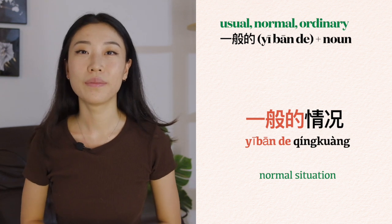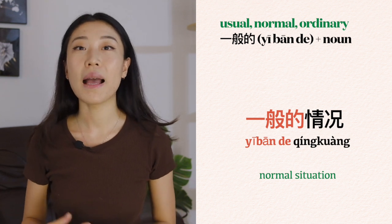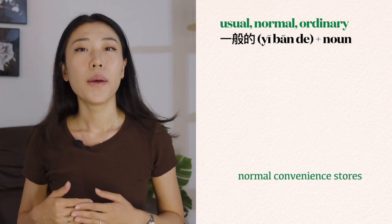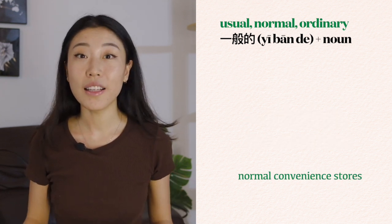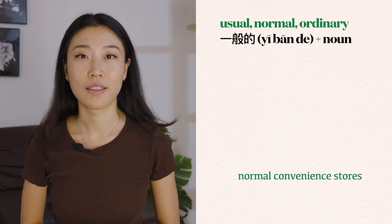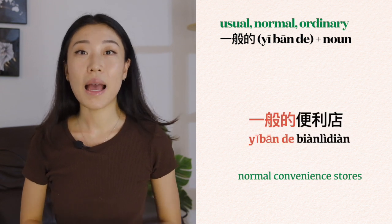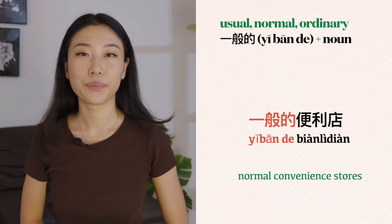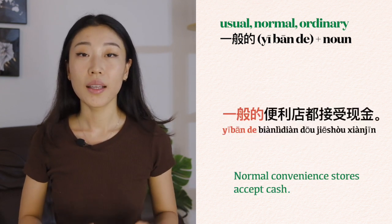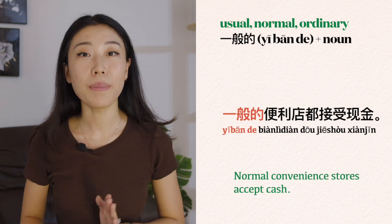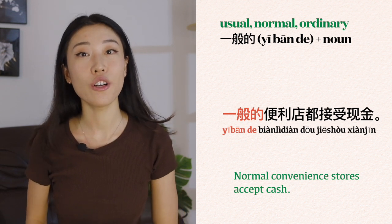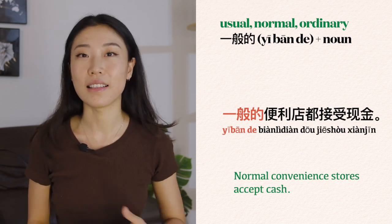一般的情况 — a normal situation. Normal convenience stores: 一般的便利店. For example: 一般的便利店都接受现金 — Normal convenience stores all accept cash.